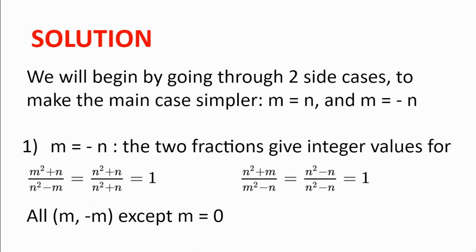First we will look at m = -n. Then the two fractions simplify to (n² + n) / (n² + n) and (n² - n) / (n² - n), which are both equal to one and so both integers for all n apart from zero. So all values of the form (m, -m) work except m = 0.